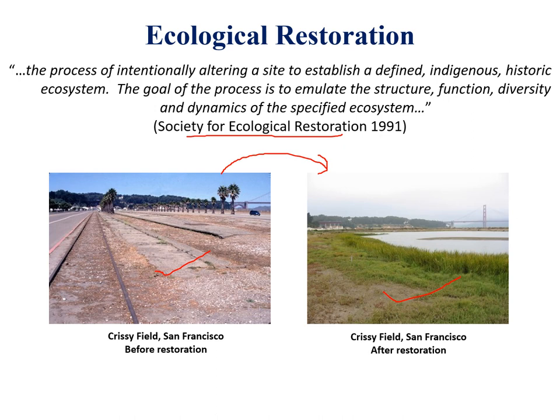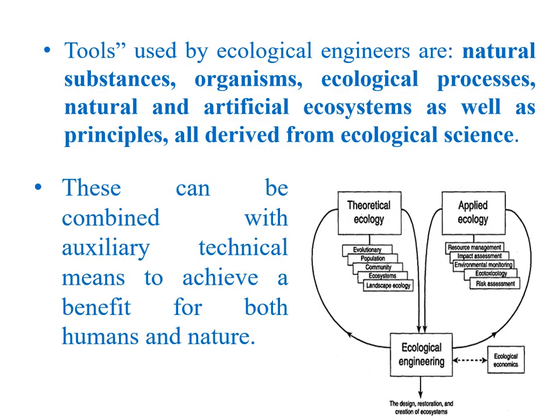What do we mean by tools, and how are these tools used in ecological engineering? Tools used by ecological engineers are generally natural substances, and most of the time organisms or species are the substances for maintenance of ecosystems. Ecological processes may also act as tools. Natural and artificial ecosystems, as well as principles derived from ecological sciences, can act as tools for ecological engineering. Here we see a diagram showing theoretical ecology and applied ecology, and ecological engineering is the integration of both.